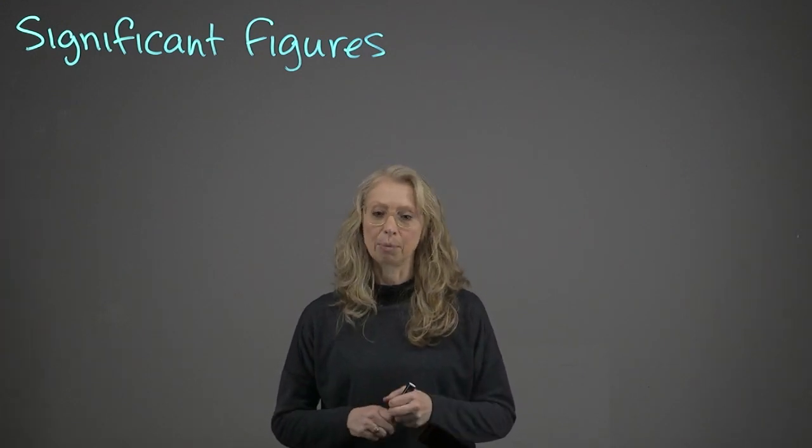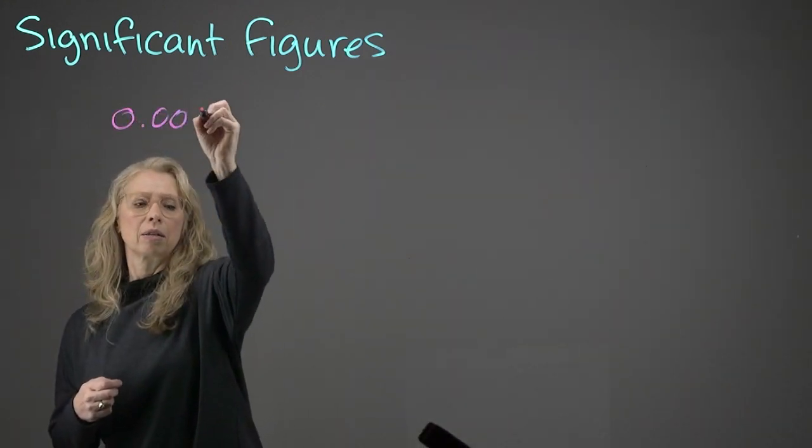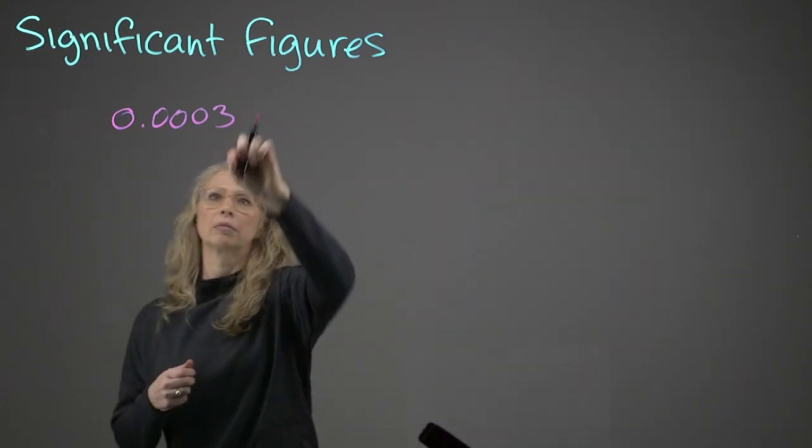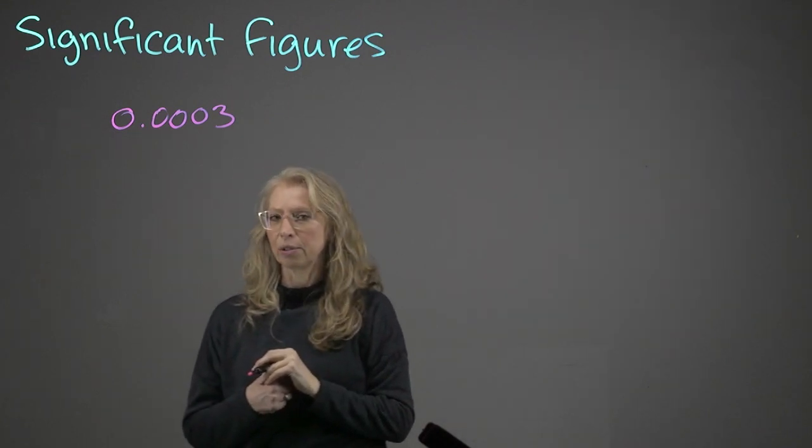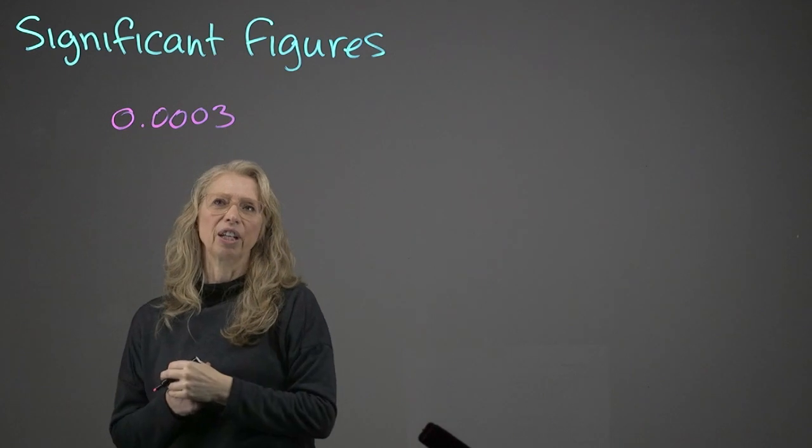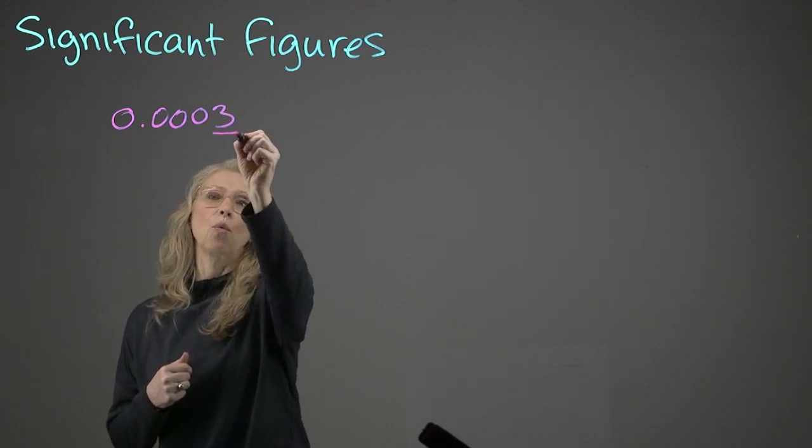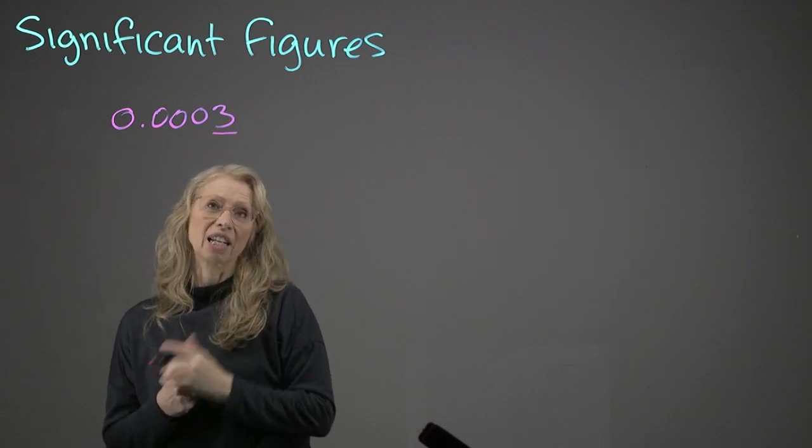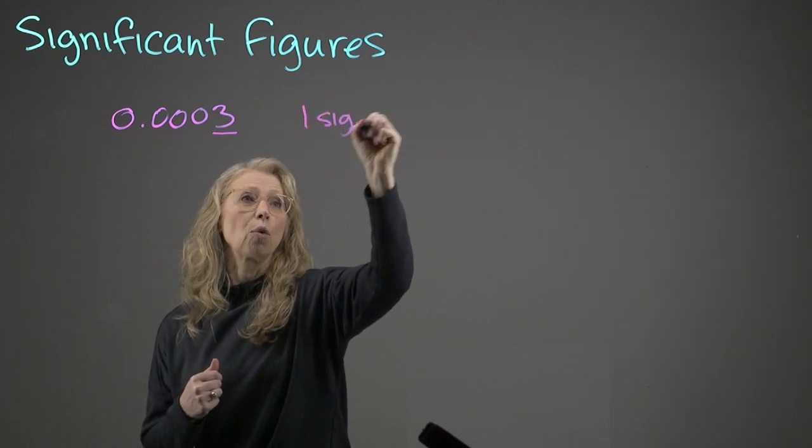So let's start with a couple of examples. If I write this value, we have zeros to the left, which are called leading zeros, and these don't count towards the significant figure. If anything, they're placeholders. And when we get to our first non-zero number, we can say that this is significant. So this value has one significant figure, or one sig fig.